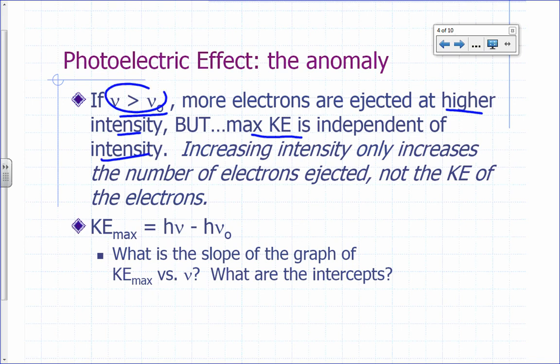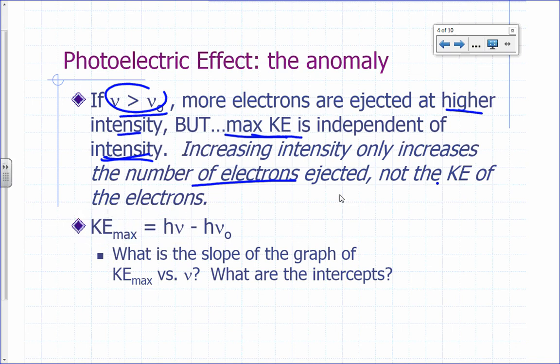If you were to plot kinetic energy versus frequency, you're going to get a straight line. The equation is: KE = h*nu - h*nu_0. There's a minimum frequency needed to get electrons to eject — that's the threshold frequency nu-naught. If you fit those data points to a straight line, your data would have a slope equal to h and a y-intercept of negative h*nu_0.